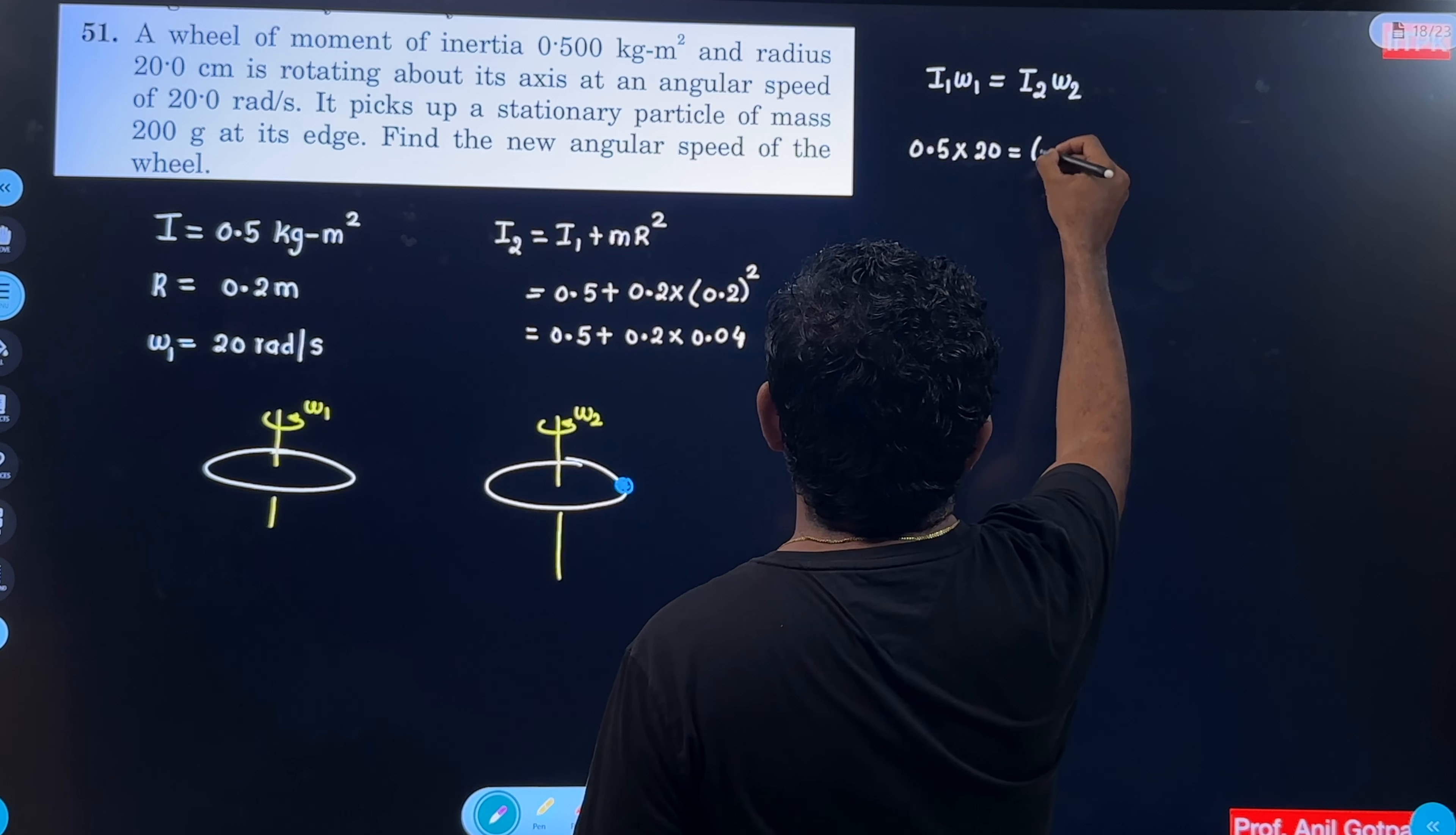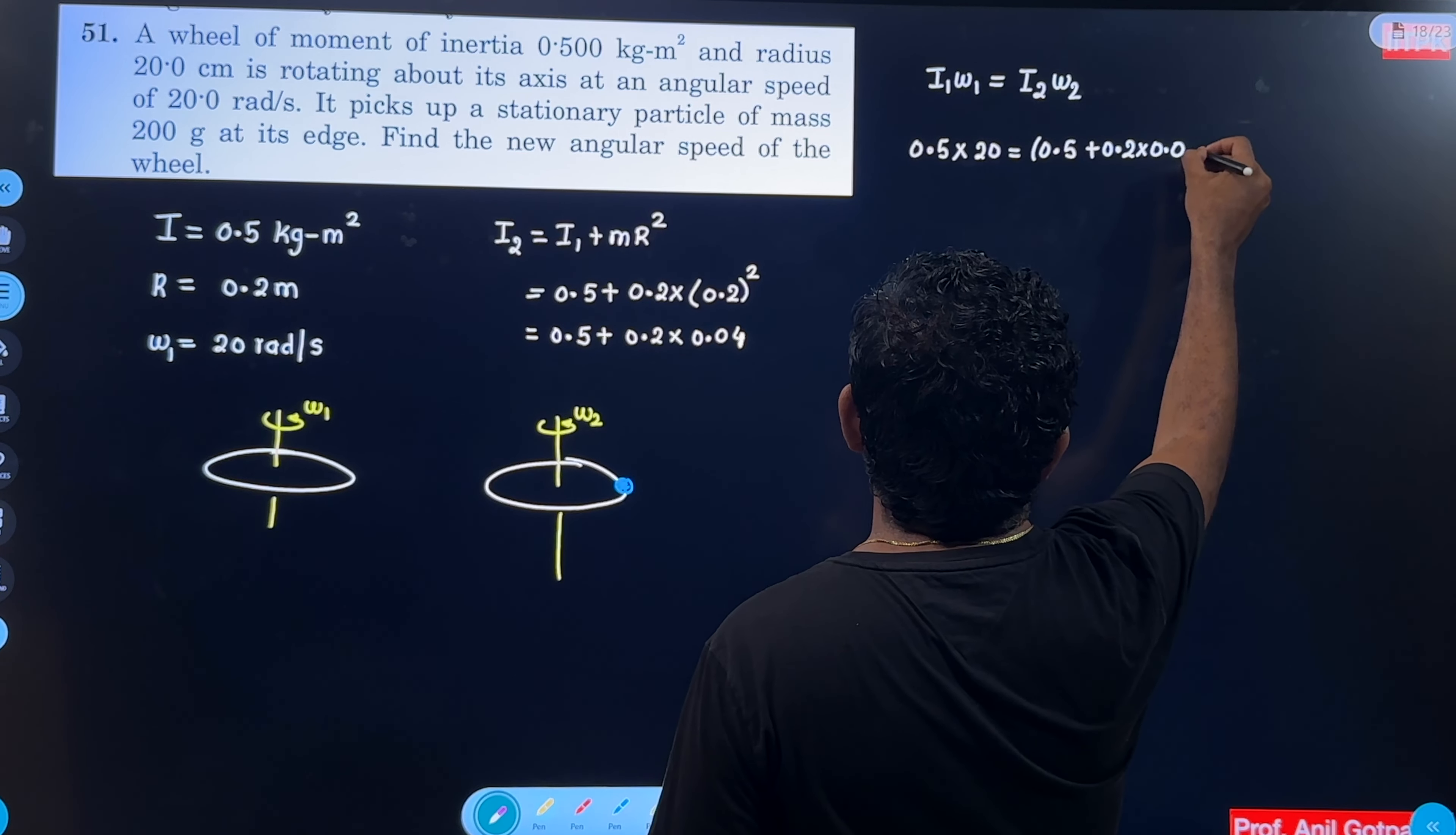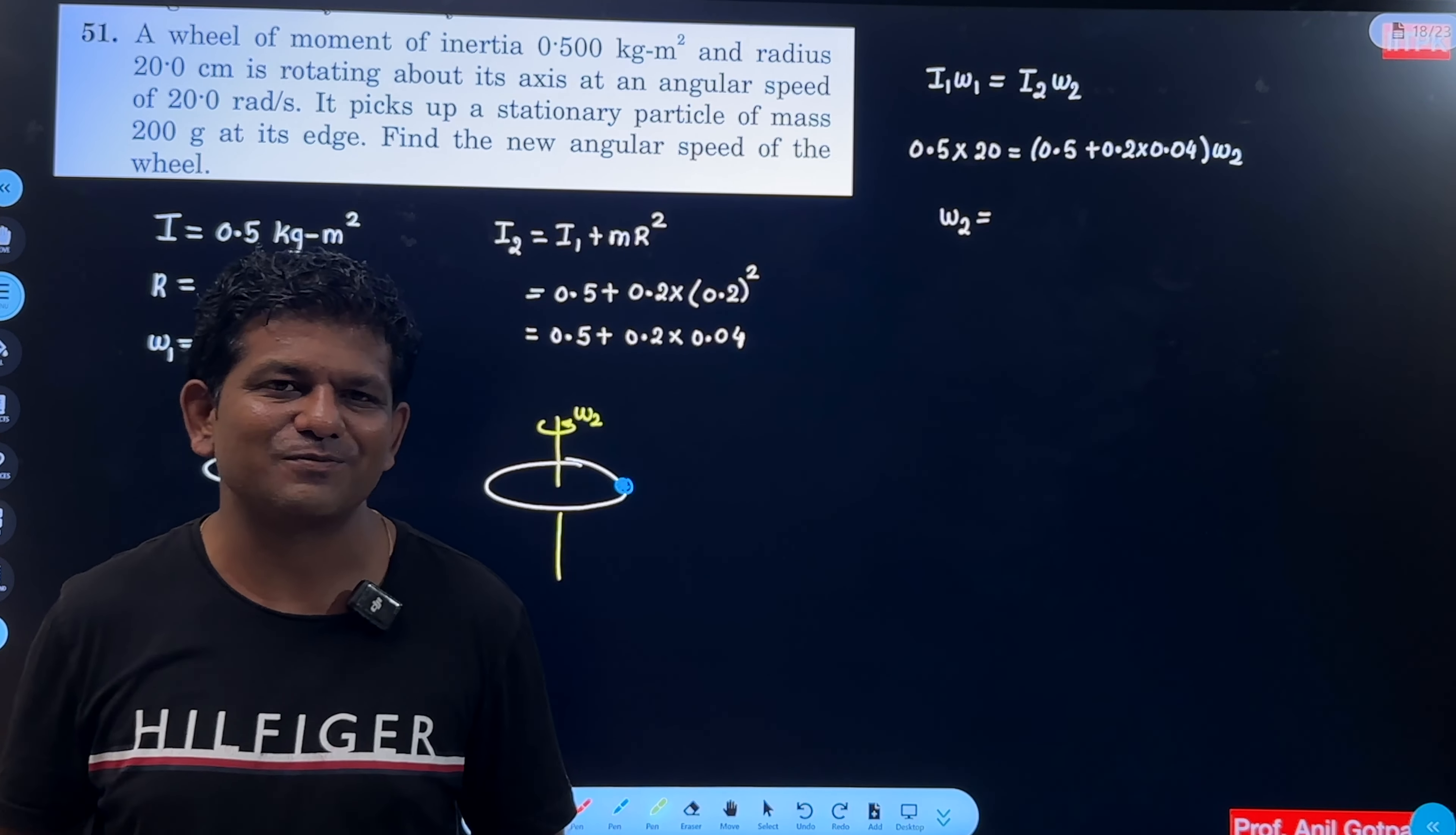I2 is 0.5 plus 0.2 into 0.04 into omega 2. So this calculation we will get omega 2, it means new angular speed.